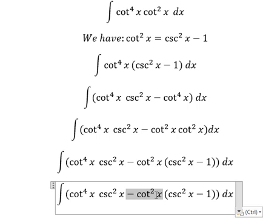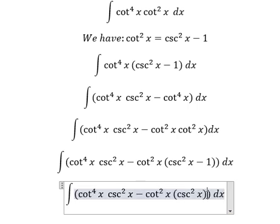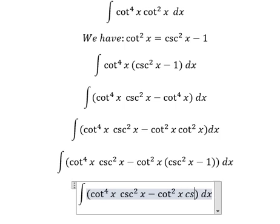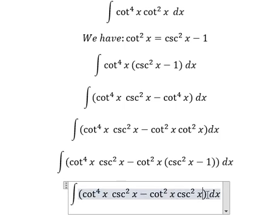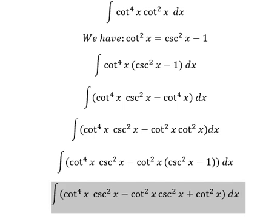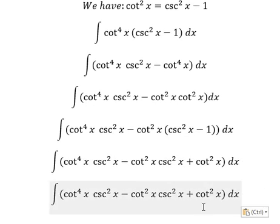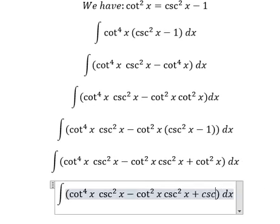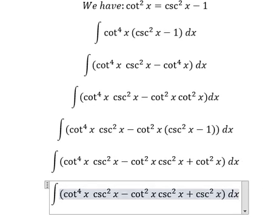So this one multiply by this one and this one, and now we have like this. So this one we change by cosecant squared x minus one.